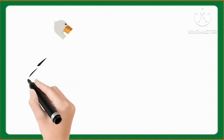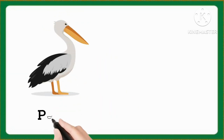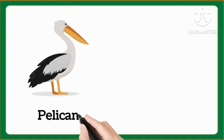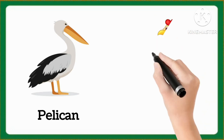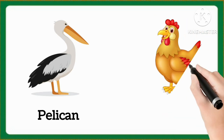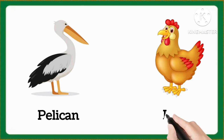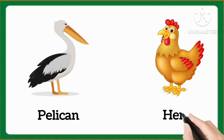And which word is this, kids? This is pelican. Pelican. And tell me, which word is this, kids? This is hen. Hen.